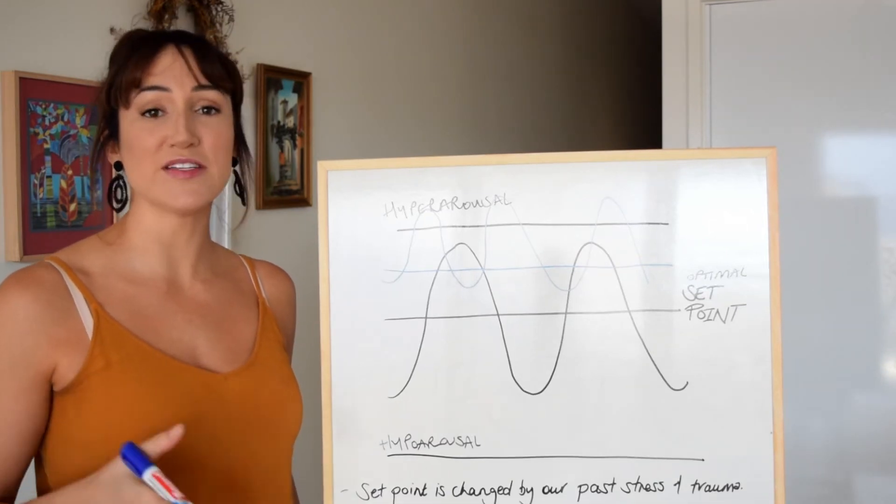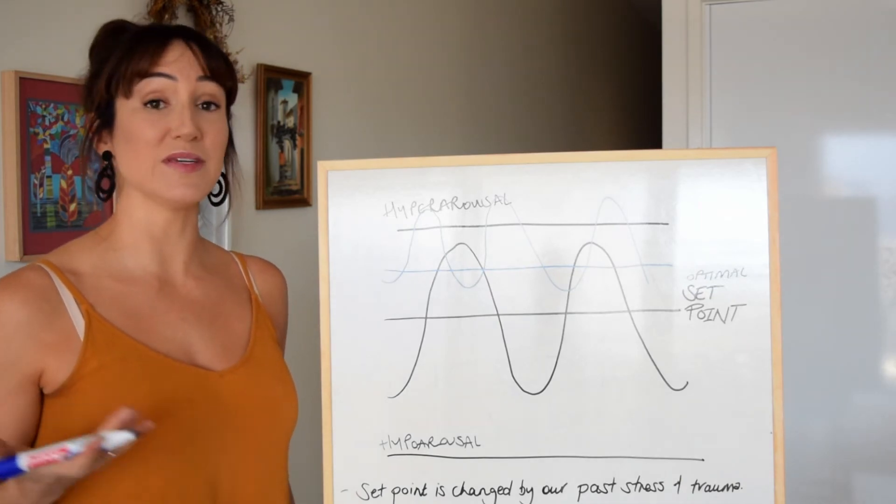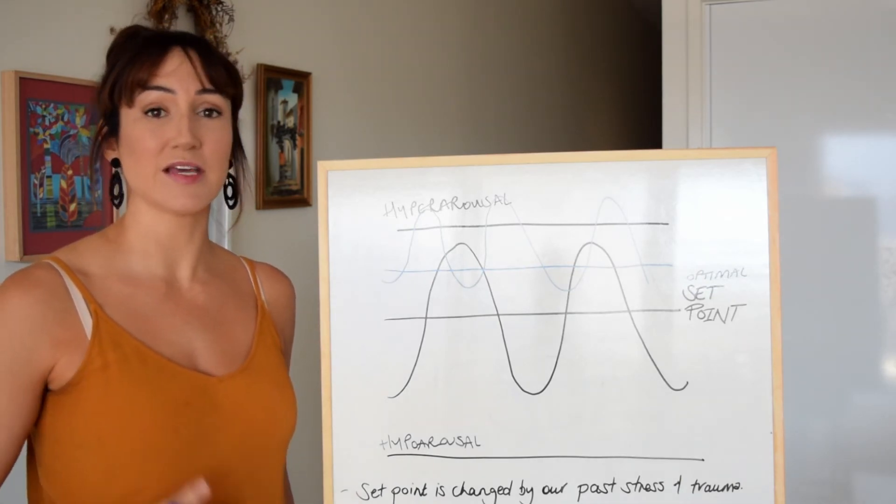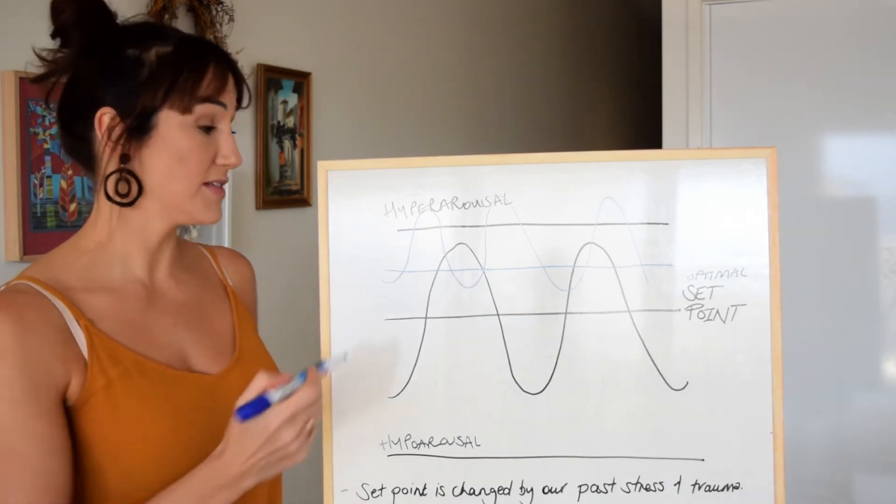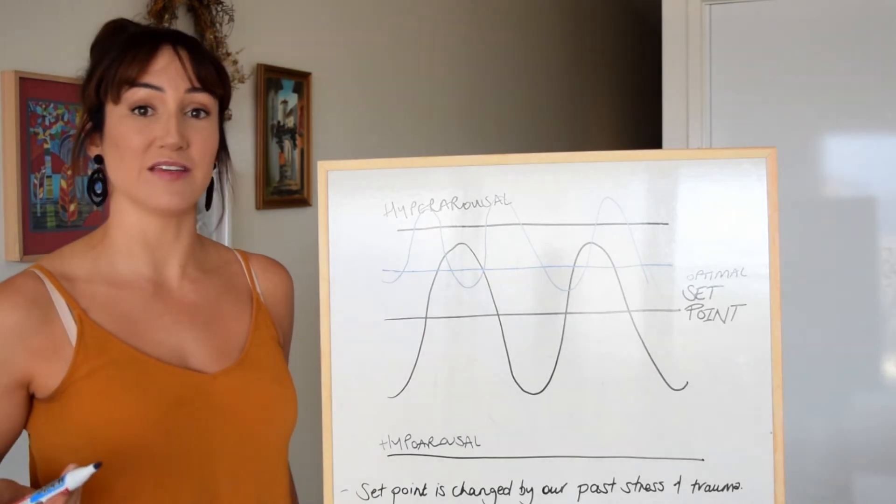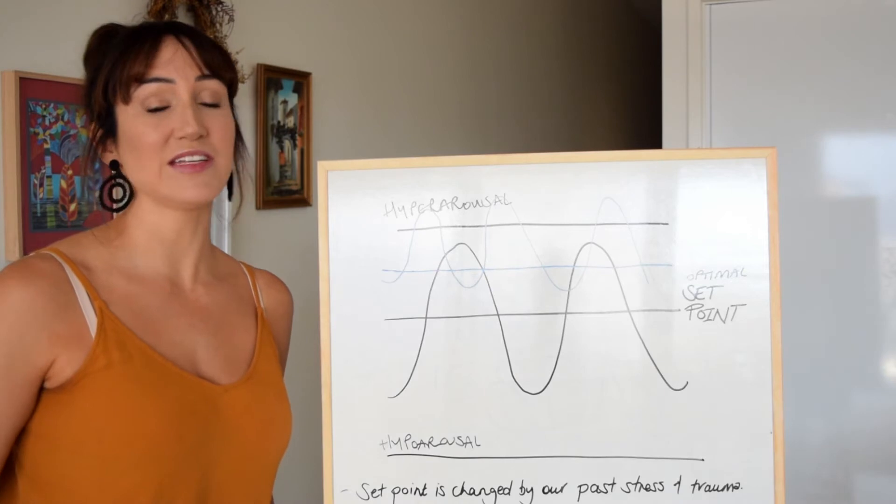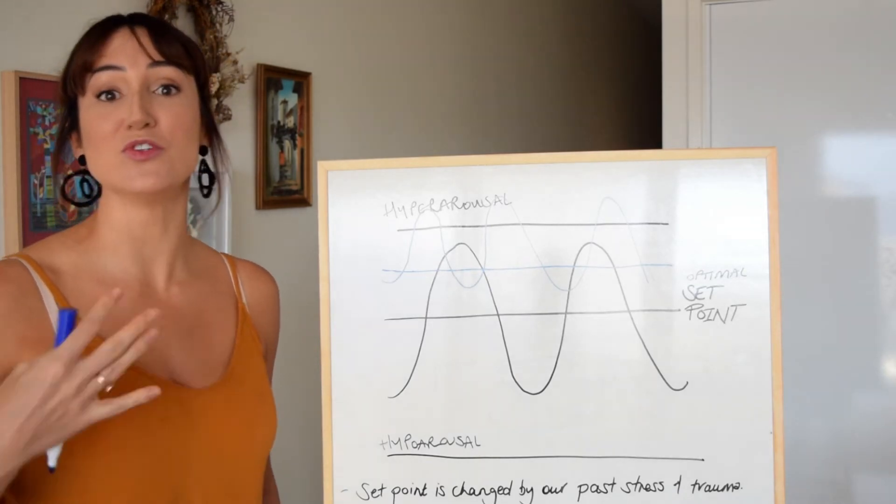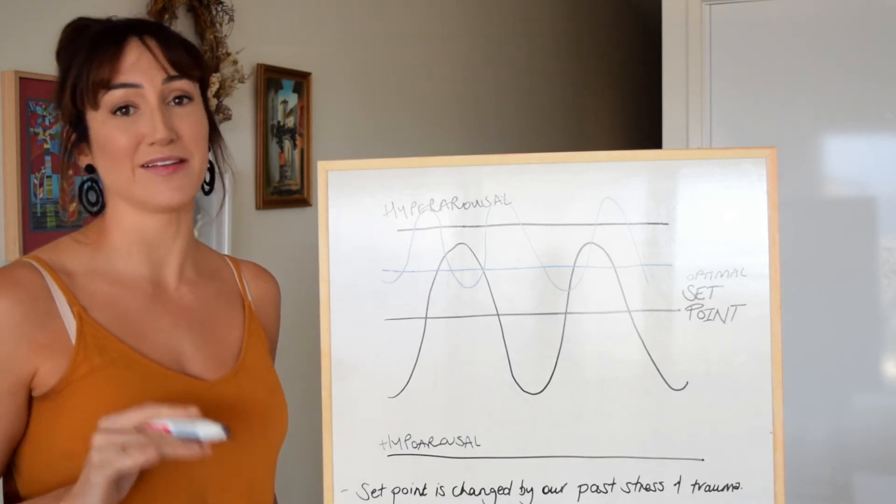When we're trying to move into a state where we're calm and relaxed, there can be a sense of tension or resistance because the nervous system is not familiar with being in that state. It finds that the set point that feels more comfortable is the one where there's higher arousal, tension, and anxiety. You may actually seek that out by being on your phone more or doing more because that's a more comfortable state than not doing quite as much.